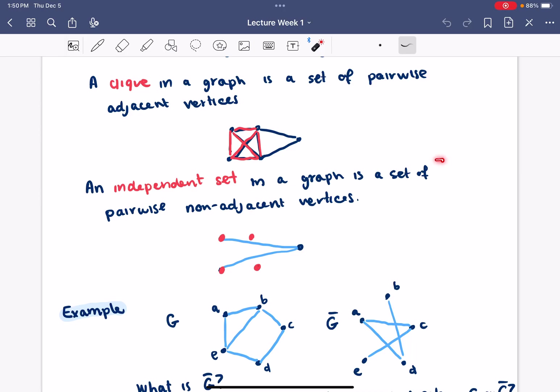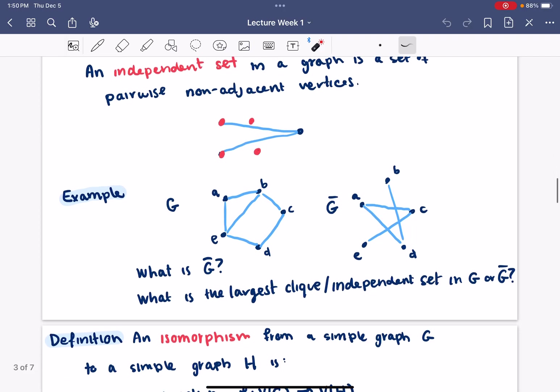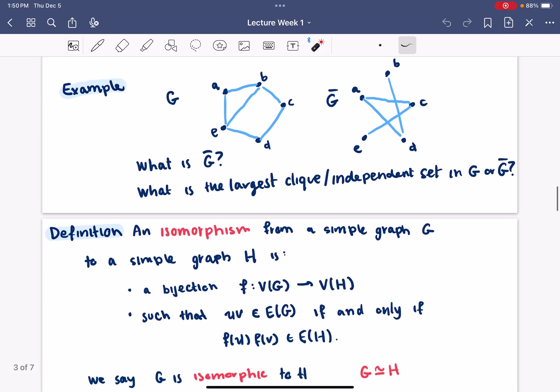An independent set is sort of the opposite of that - pairwise non-adjacent vertices. Here's an example where we started with a graph G and wrote down its complement G-bar. Then, we also identified the largest cliques and independent sets in that graph. If you like, you could pause the video here and work out that exercise.